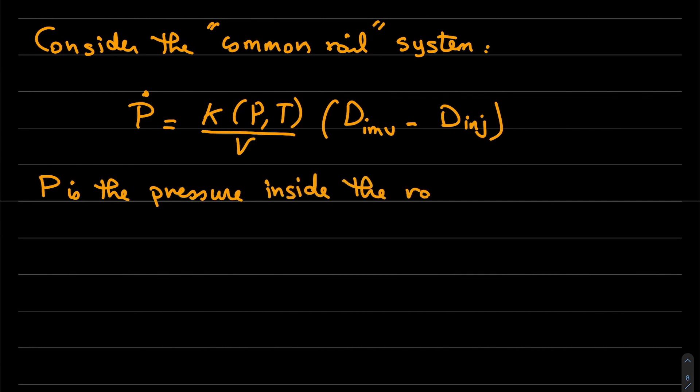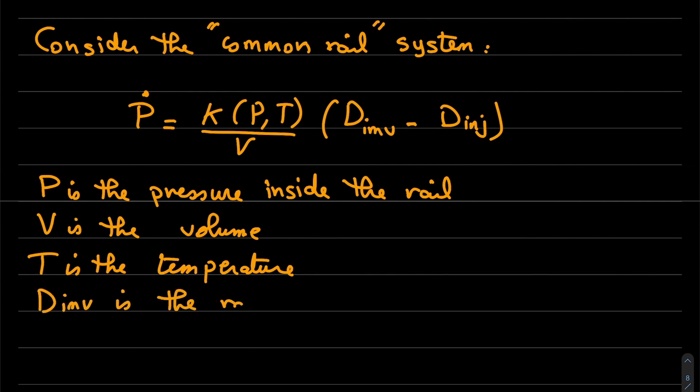If we consider the equations, we have the pressure inside the rail is P, with this equation P dot, where V is the volume and T is the temperature. We have the variation of the pressure is the difference between the rate of flow D_inv and D_inj, which is the rate of flow of the injected fuel inside the cylinder.